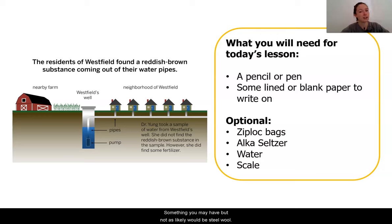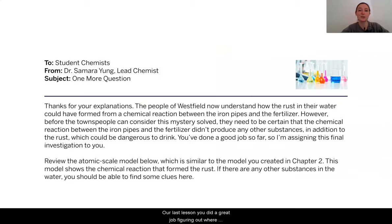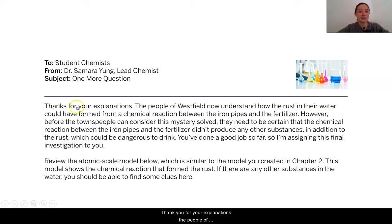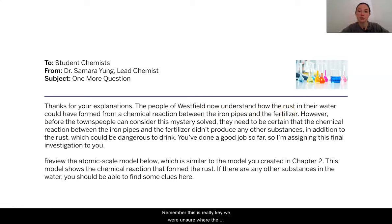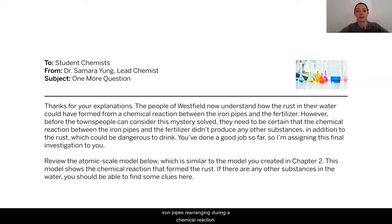Something you may have but not as likely would be steel wool. We are going to continue our investigations from where we left off in our last lesson. In our last lesson, you did a great job figuring out where the brown substance in the water is from. Let's read this email together from Dr. Young. Students, thank you for your explanations. The people of Westfield now understand how the rust in their water could have formed from a chemical reaction between the iron pipes and the fertilizer. We were unsure where the brown substance exactly was coming from until our most recent lesson, where we figured out the only possibility was from the fertilizer and the iron pipes rearranging during a chemical reaction.